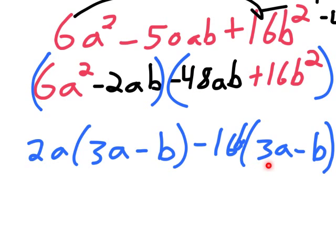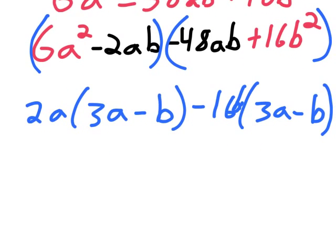You can see why we made sure this number was positive—now we have two parentheses that exactly match, which is the goal of factoring by grouping.